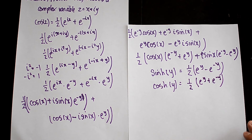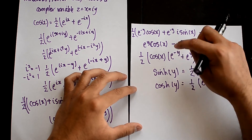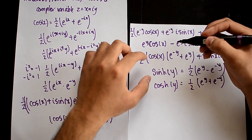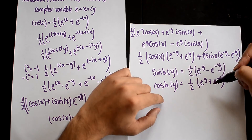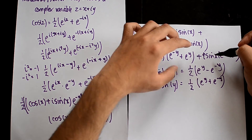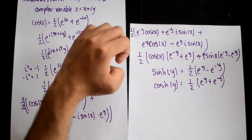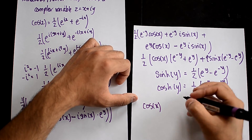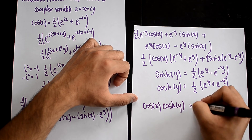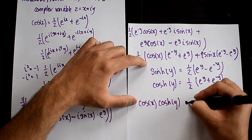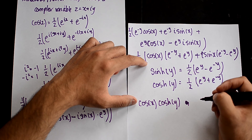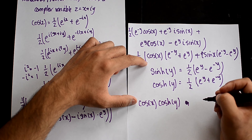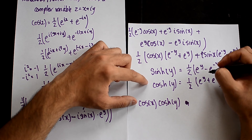As you can see, this looks quite familiar. If you multiply the half in, one half of e^(-y) plus e^(y) is cosh y. And then if you multiply the half into the sin term, it's sinh y. So cos x multiplied by cosh y comes from substituting in those terms. And the other part gives minus sinh y.